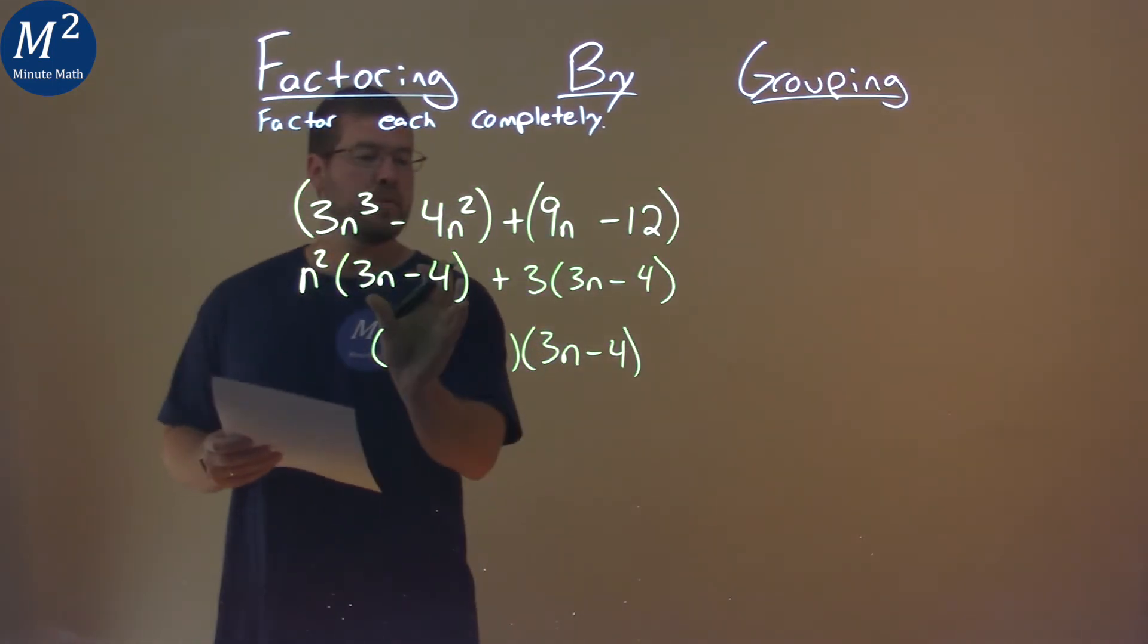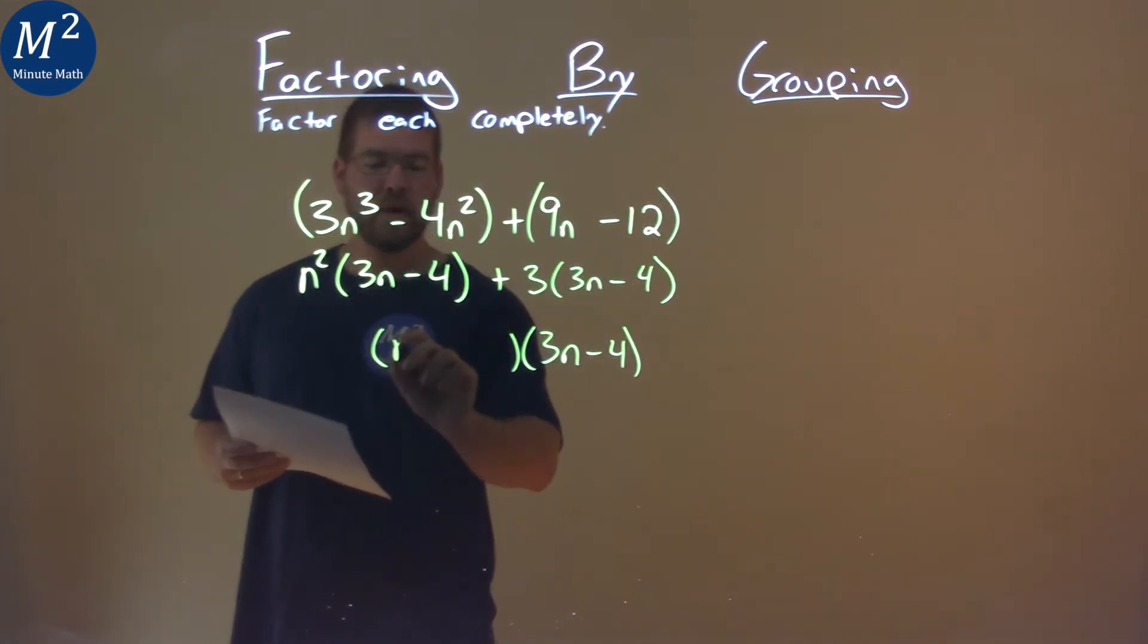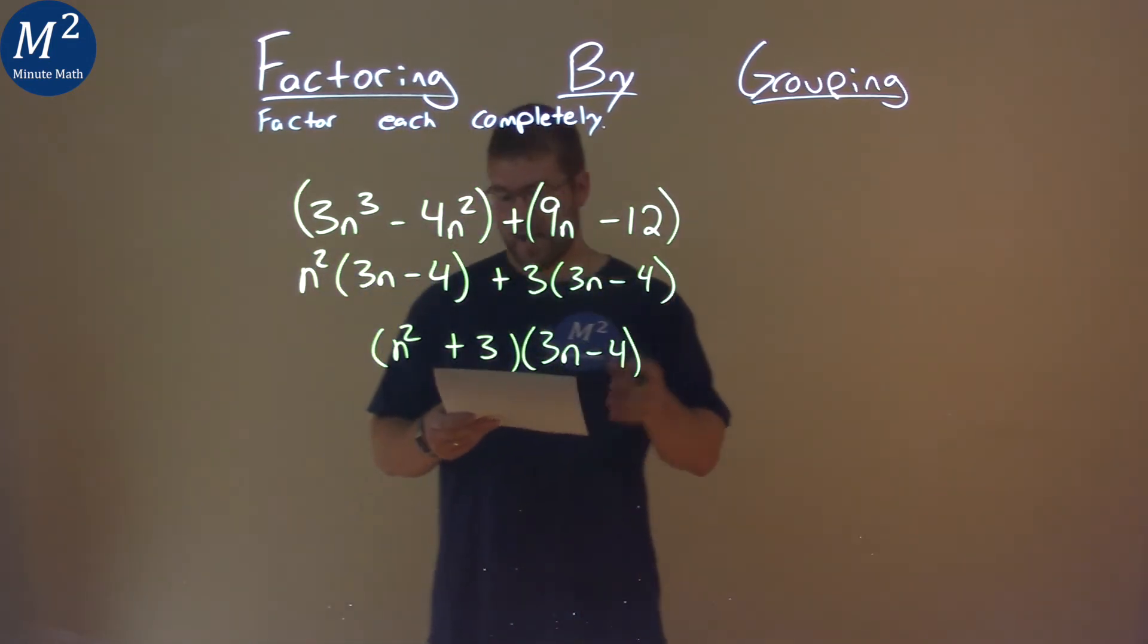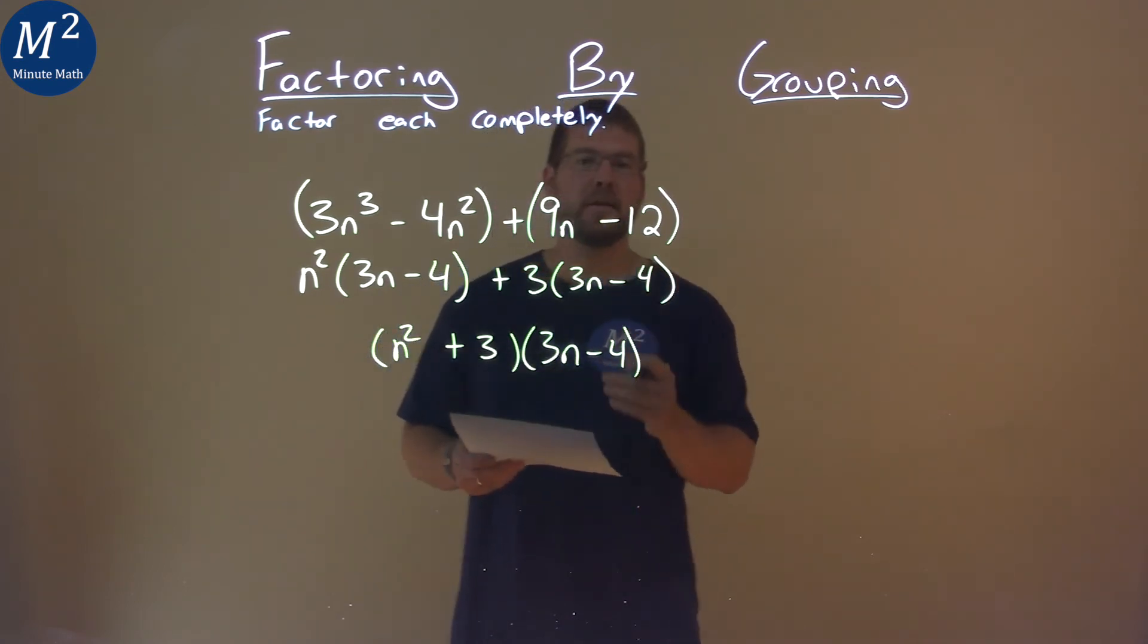And what I'm left with now, by pulling that out, is the n squared plus 3. And so now we have our final answer of n squared plus 3 times 3n minus 4.